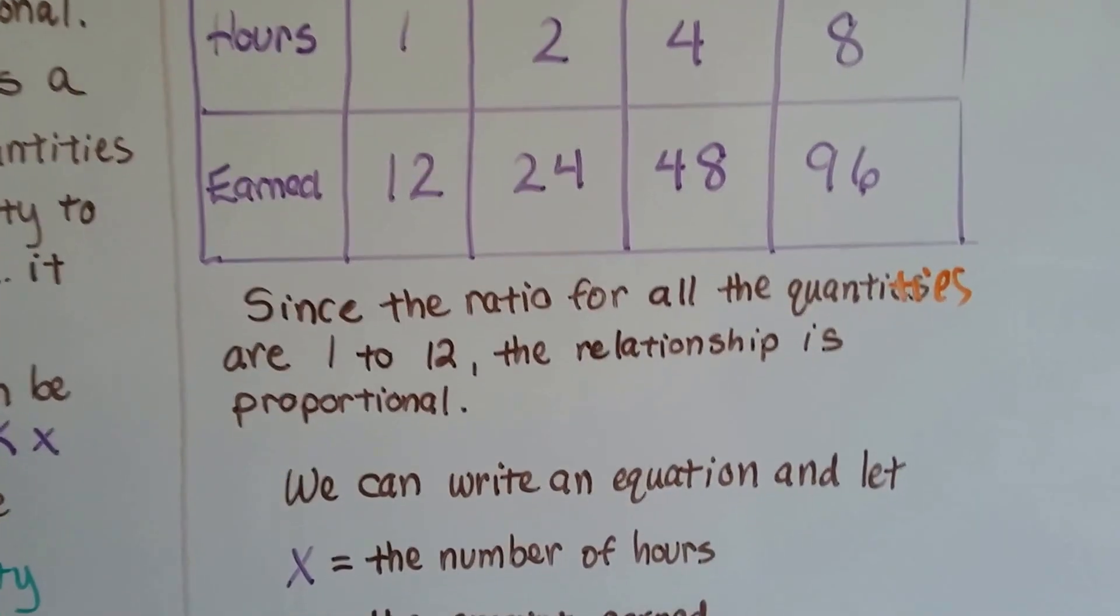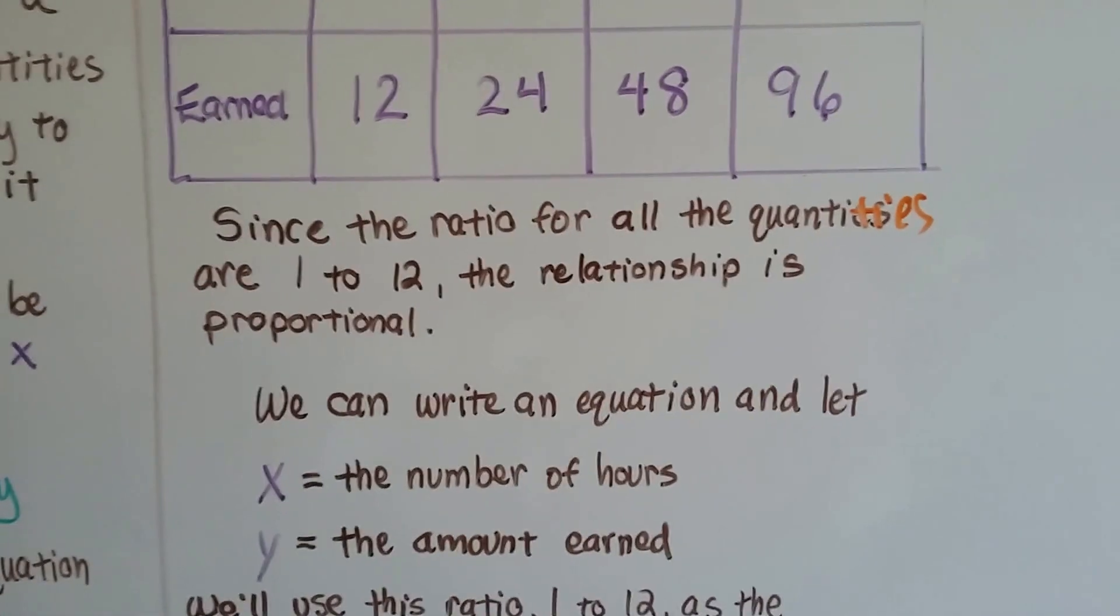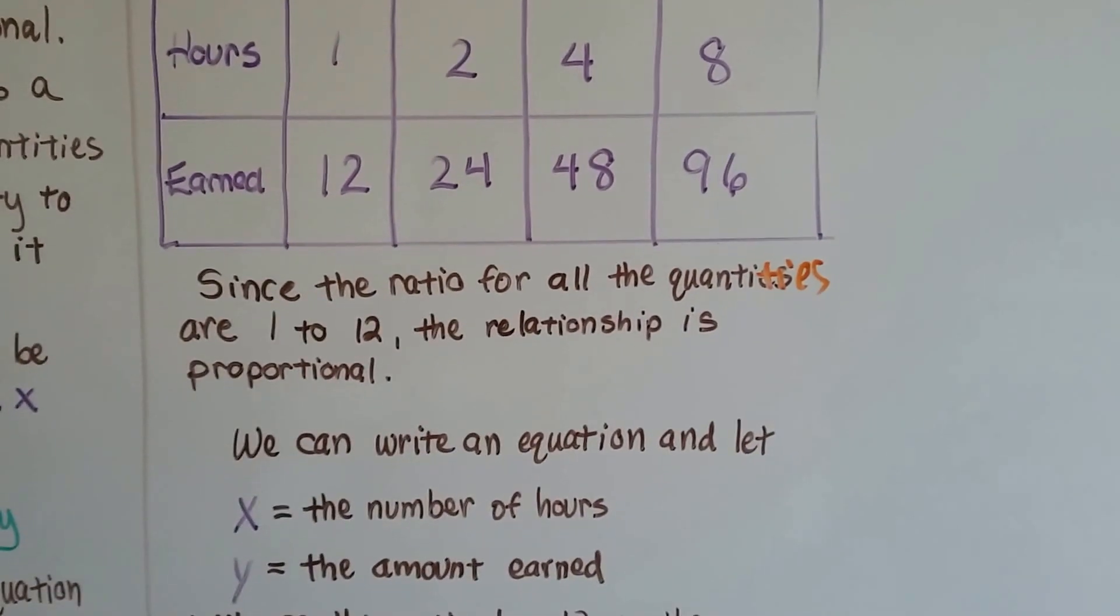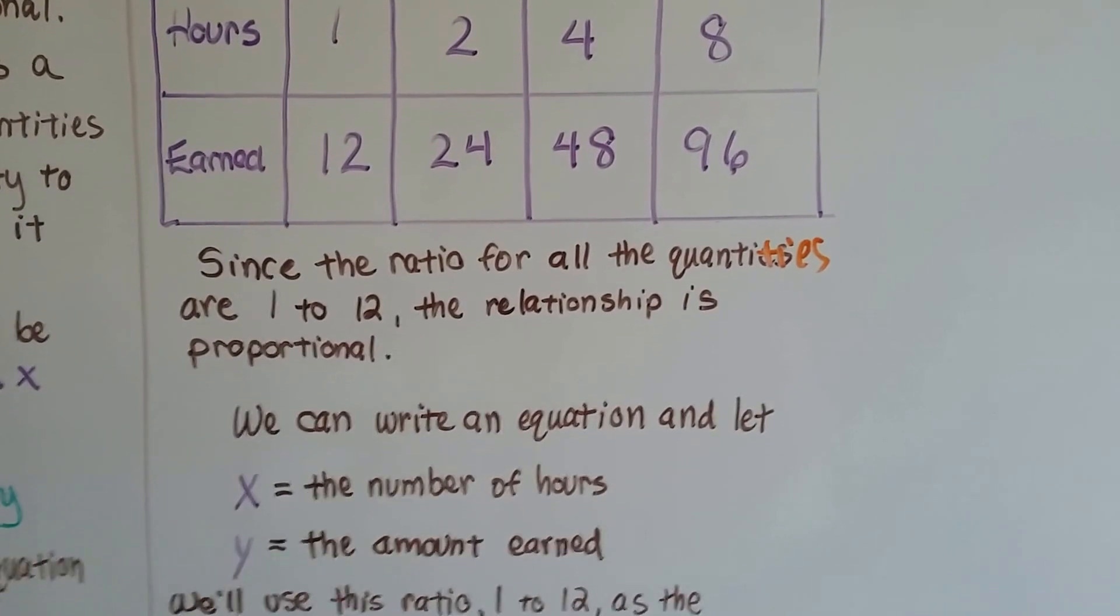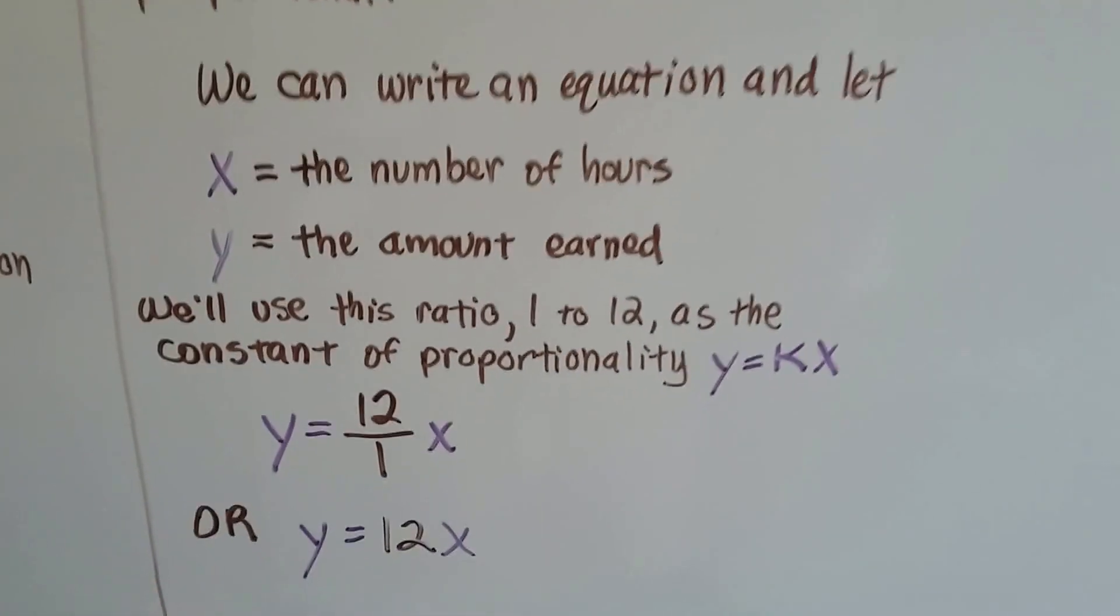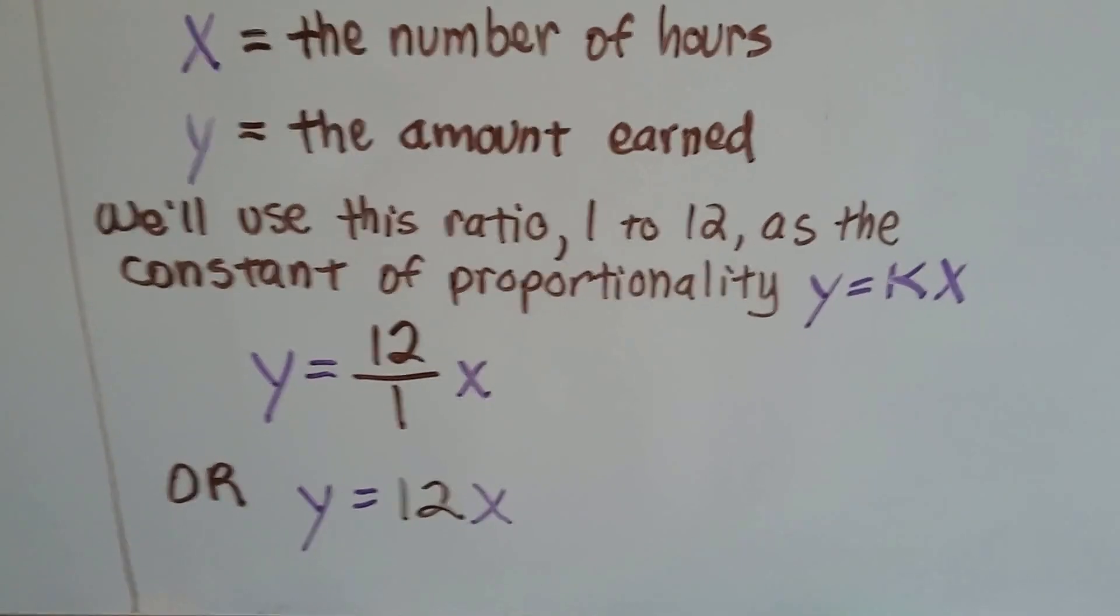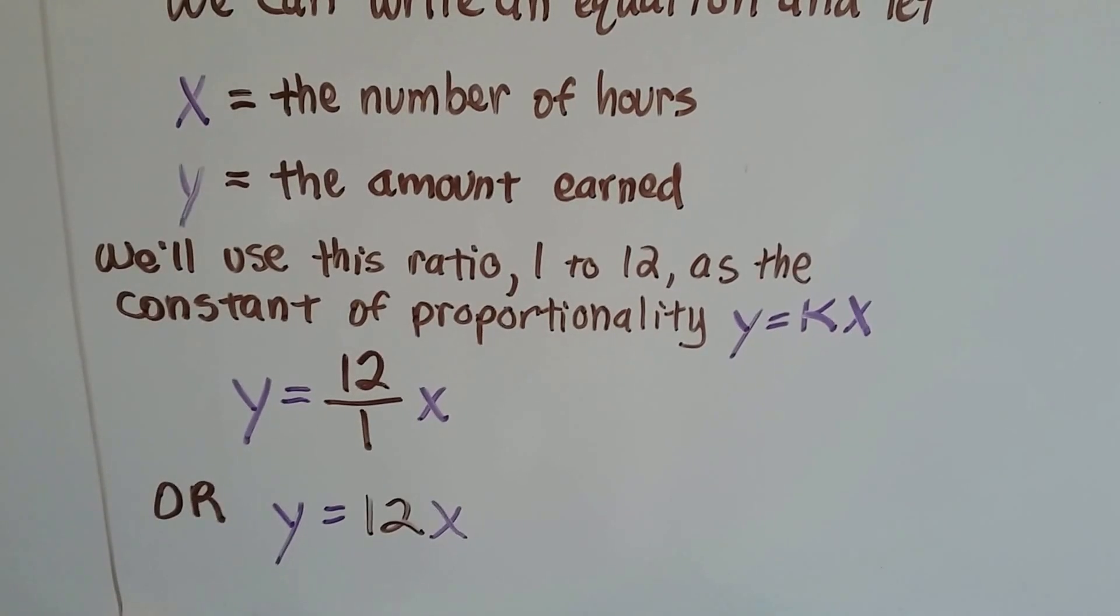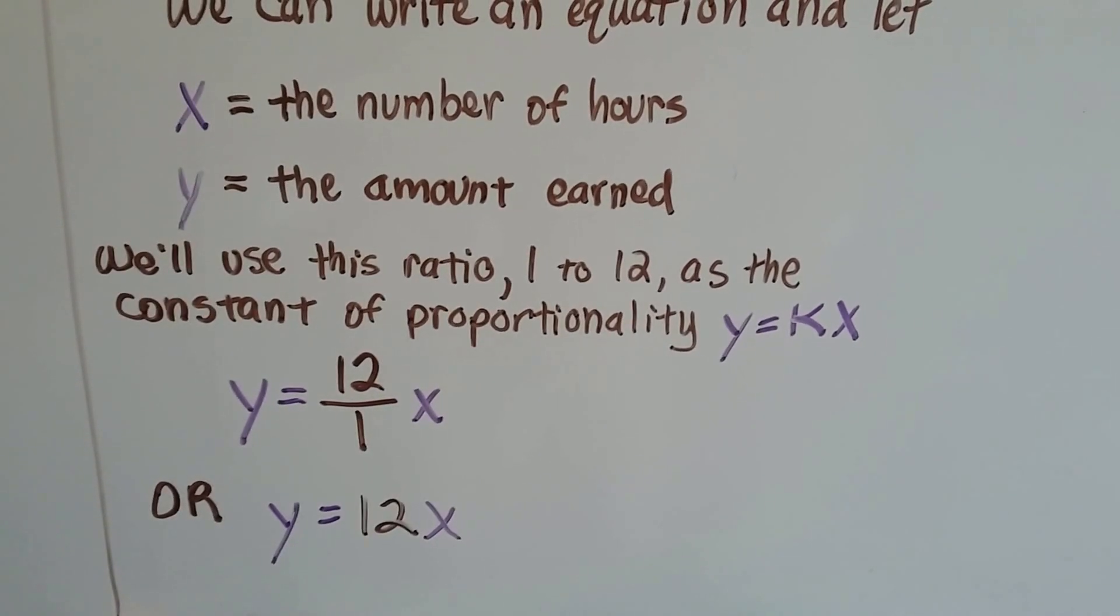So the ratio for all the quantities are 1 to 12. The relationship is proportional. We can write an equation and let x equal the number of hours and y equal the amount she earned. We'll use this ratio 1 to 12 as the constant of proportionality. She's not going to make a different amount of money per hour. It's going to be at $12 per hour for a while.